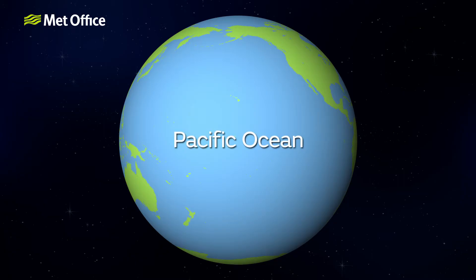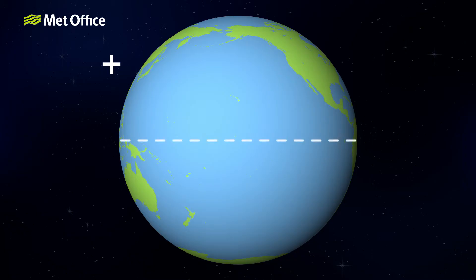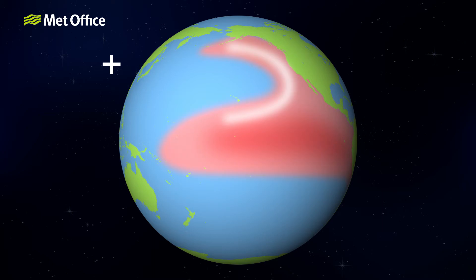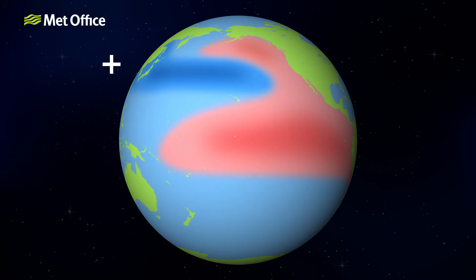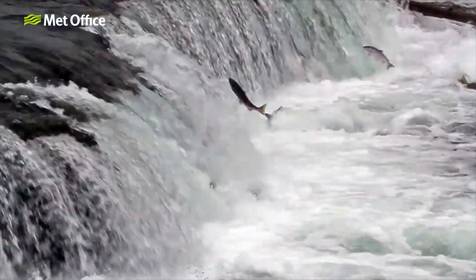The PDO has positive and negative phases. In its positive or warm phase, higher than normal sea surface temperatures are found stretching from the western coast of North America down to the equator. These high temperatures produce a horseshoe-shaped pattern which surrounds a core of cooler surface waters in the central and northwestern Pacific. These warmer surface waters can result in bountiful salmon supplies in southern Alaska.